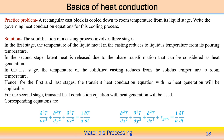Let us start with a practice problem. For example, a rectangular cast block is cooled down to room temperature. One cast block is considered — it has to cool down to room temperature from its liquid stage. During the casting process, the rectangular block is initially in the liquid state and has to be cooled down to room temperature. So in this case, what equation should we consider? First we need to understand how this casting process involves heat transfer.